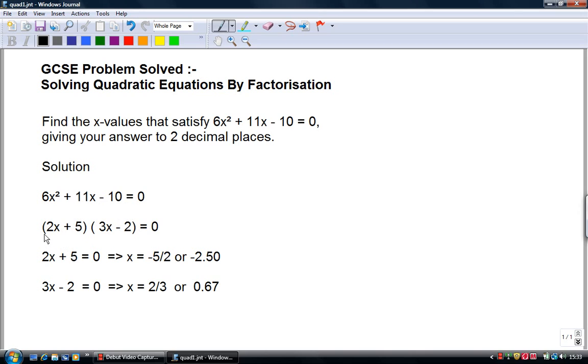Right, and then from there on, what you do is take each bracket and put each bracket equal to 0, and then manipulate that small simple equation and take the 5 across the other side to make -5 and then divide it by 2. So -5 divided by 2 equals -2.5.